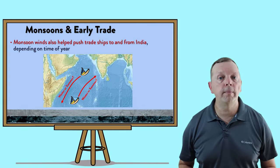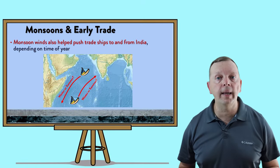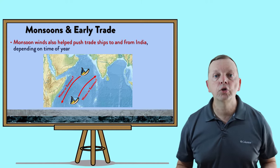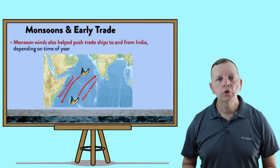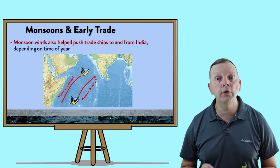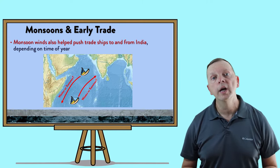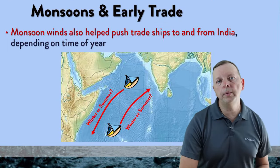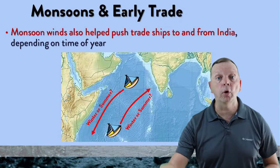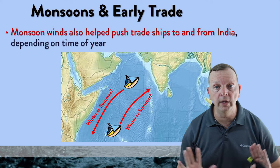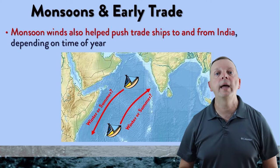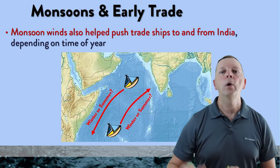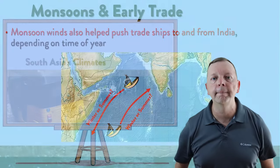Monsoons also historically impacted trade. Understanding the monsoon winds, sailors would time their journeys to approach India in the summer when winds were at their backs pushing them there, and then depart from India in the winter when winds pushed them away.